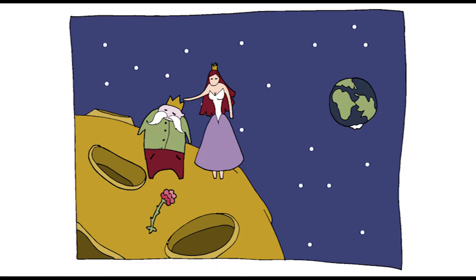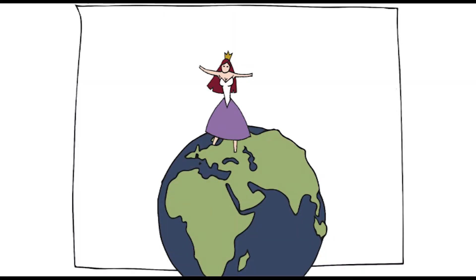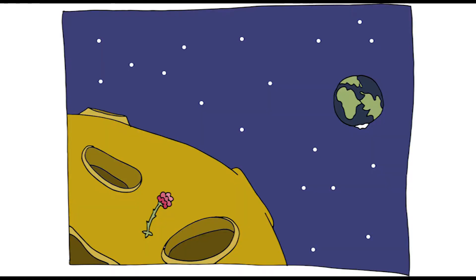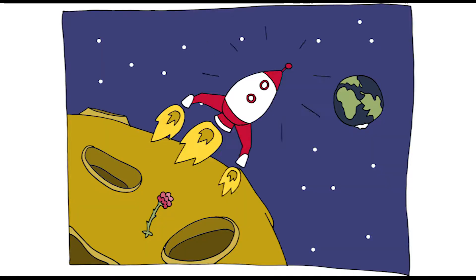The queen, bored to death, dreamed of only one thing, living on the Earth. The king, who wanted to make her happy, built a spaceship in order to reach the planet.